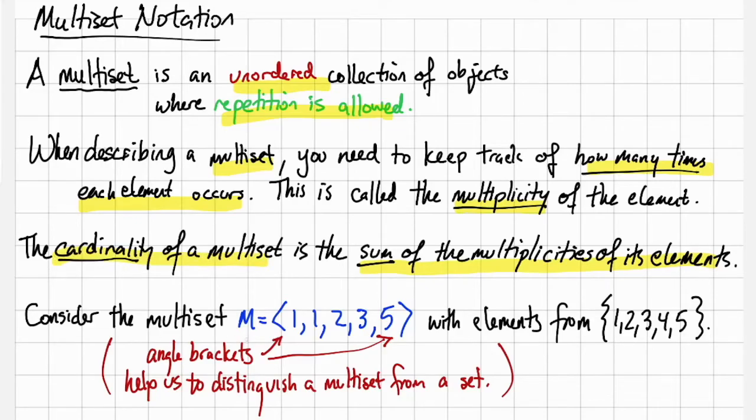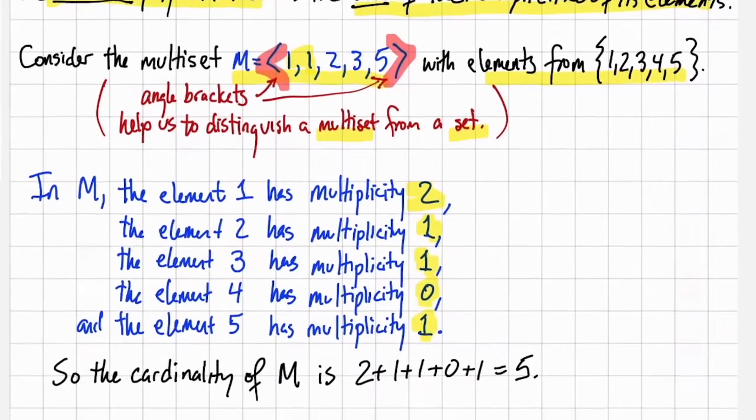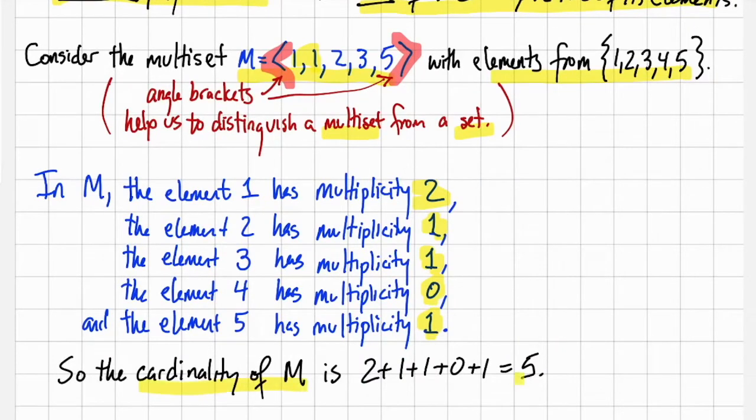As an example, let's look at this multiset 1, 1, 2, 3, 5 that has elements from {1, 2, 3, 4, 5}. Notice that we're using these angle brackets so that visually we recognize that this is a multiset and not a set. In M, the element 1 has multiplicity 2, element 2 has multiplicity 1, element 3 has multiplicity 1, element 4 has multiplicity 0, and element 5 has multiplicity 1. If we add all these numbers together, we get the cardinality of M, which is 5.